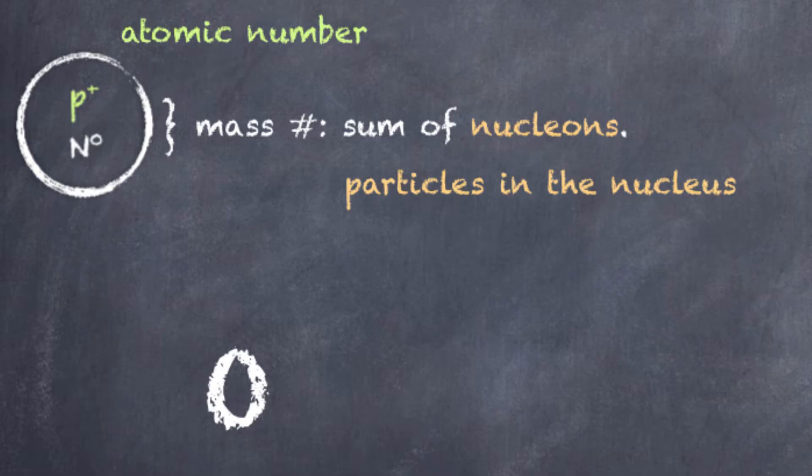So, if the atomic number can't change, it's not going to dictate the version of a particular particle or isotope that we have, it must be this mass number that helps us do that.